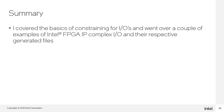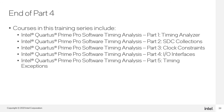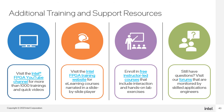In summary, I covered the basics of constraining for IOs and went over examples of Intel FPGA IP complex IO interfaces and their respective generated files. This concludes Part 4 of a 5-part series. Check out Parts 1 through 3 if you haven't already, along with Part 5 listed here. There are many ways to get training about Intel FPGAs: watch hundreds of videos on the Intel FPGA YouTube channel, register for e-learning classes on the Intel FPGA training website, or enroll in regularly scheduled instructor-led online classes.